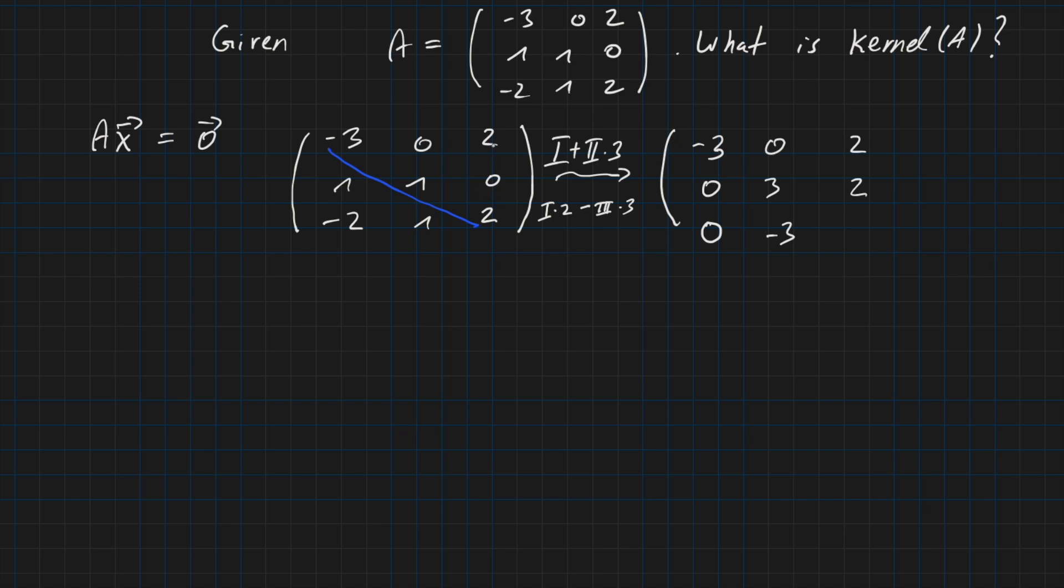And we have two times two, this is four, minus three times two, this is six. Four minus six is minus two.